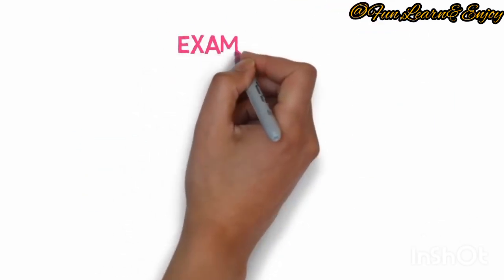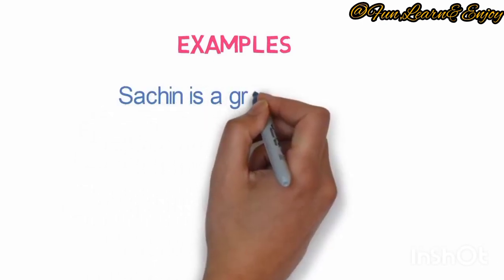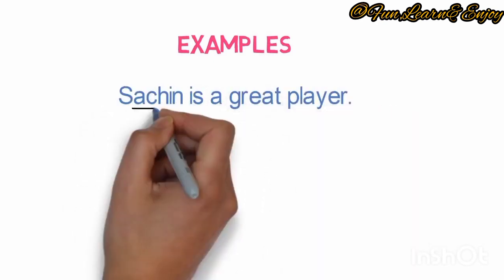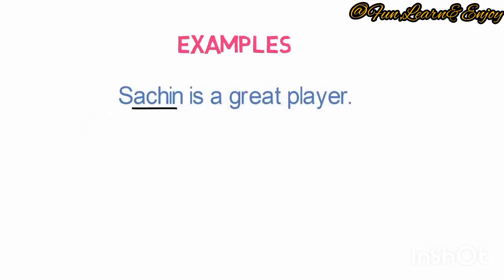Let's look into the sentence examples where nouns are being used. Sachin is a great player. Here, Sachin and player both come in the category of person. So they are nouns.